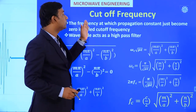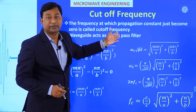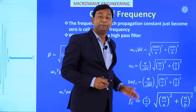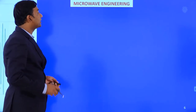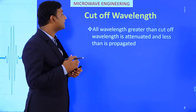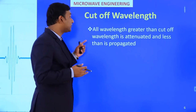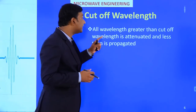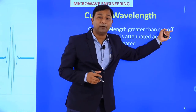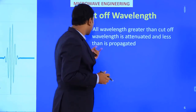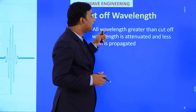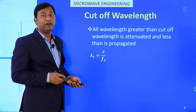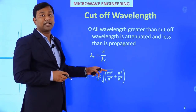The cutoff frequency is where the propagation constant becomes zero. At cutoff frequency propagation starts, so f must be greater than fc. Since frequency is inversely proportional to wavelength, if the cutoff frequency is low then the cutoff wavelength is high. All wavelengths greater than the cutoff wavelength are attenuated — for propagation along the medium the wavelength must be less than the cutoff wavelength.